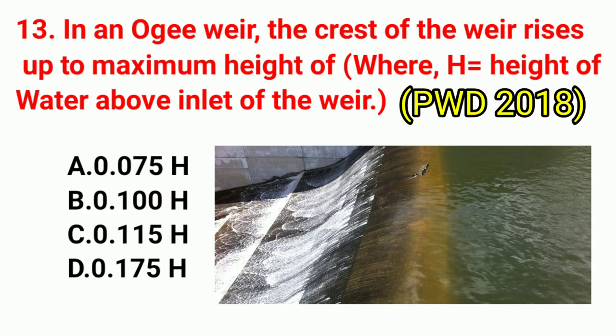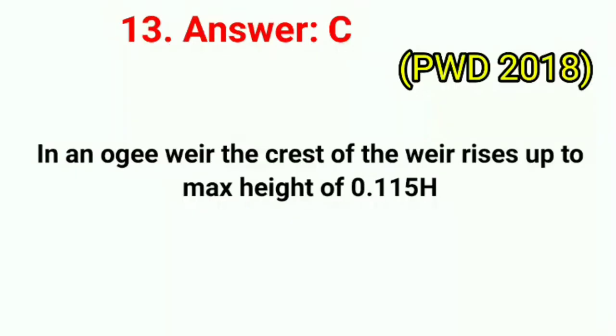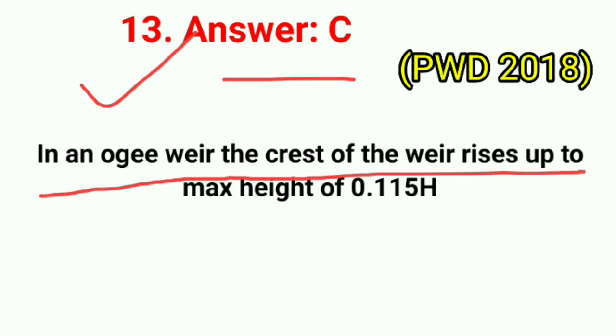Question No. 13. In an Ogee weir, the crest of the weir rises up to a maximum height of H equal to height of water above the inlet of the weir. Correct answer is option C: 0.115H. In an Ogee weir, the crest of the weir rises up to a maximum height of 0.115H.